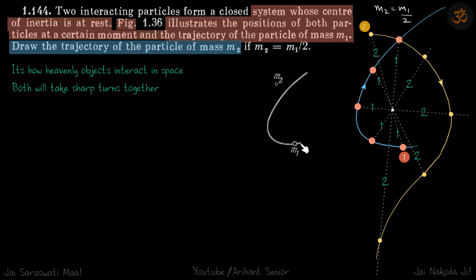If m1 is traveling on this path, what is the trajectory of m2 if the center of mass always remains at rest? I just enlarged this diagram here. So m1 initially was here and m2 was here.